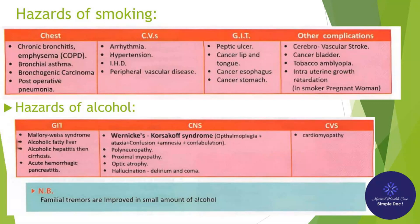Hazards of alcohol — GIT: Mallory-Weiss syndrome, alcoholic fatty liver, alcoholic hepatitis then cirrhosis, acute hemorrhagic pancreatitis. CNS: Wernicke's syndrome (ophthalmoplegia, ataxia, confusion), Korsakoff syndrome (amnesia, confabulation), polyneuropathy, proximal myopathy, optic atrophy, hallucination, delirium, and coma. CVS: cardiomyopathy. NB: Familial tremors are improved by small amounts of alcohol.